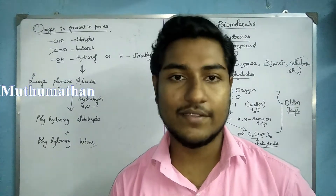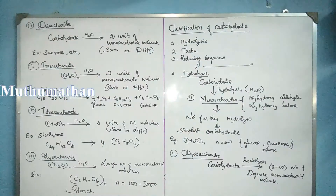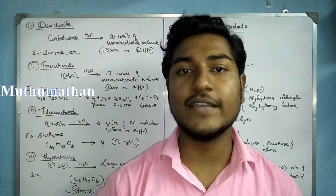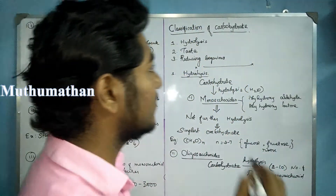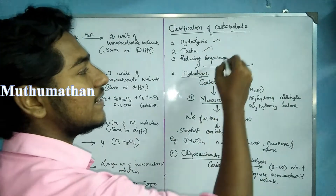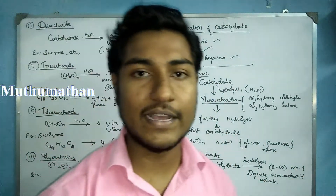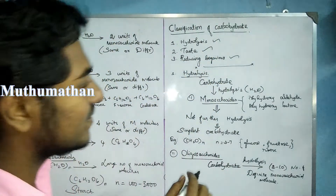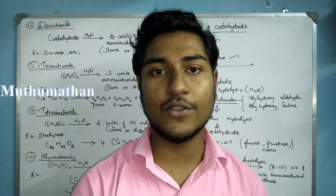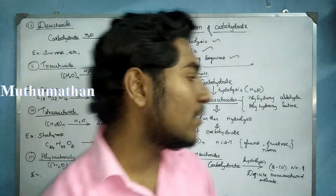We can classify carbohydrates using hydrolysis and reducing behavior. We have three types of carbohydrates based on hydrolysis. The first type is monosaccharides — these are the simplest carbohydrates.